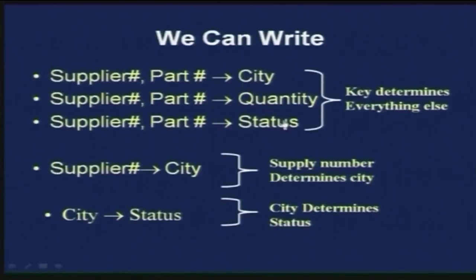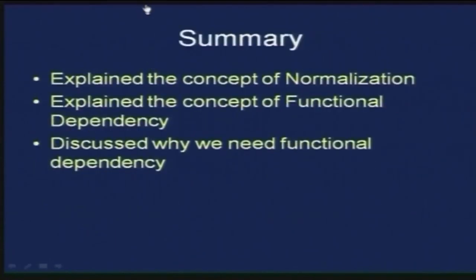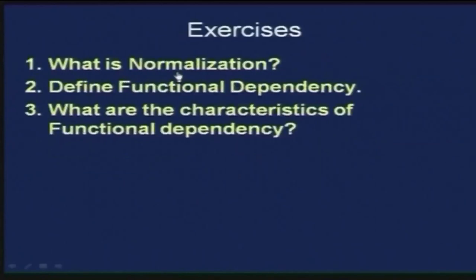In summary: a set of attributes like supplier number uniquely determines city, and city uniquely determines status. We have explained the concept of normalization and the concept of functional dependency with examples. As an exercise: define what is normalization; define the term functional dependency; and using a student and registration fees example, explain the characteristics of functional dependency between attributes and how it is defined.